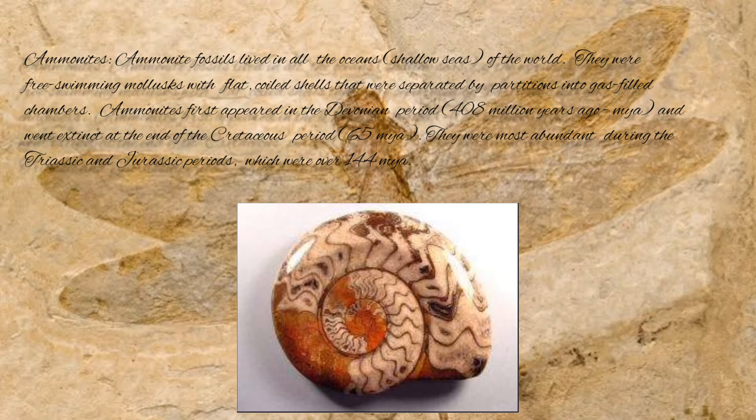Ammonites lived in all the oceans of the world. They were free-swimming mollusks with flat, coiled shells that were separated by partitions into gas-filled chambers. Ammonites first appeared in the Devonian period, 408 million years ago, and went extinct at the end of the Cretaceous period, 65 million years ago. But they were most abundant during the Triassic and Jurassic periods, which were over 144 million years ago.